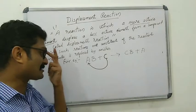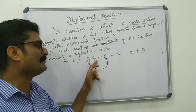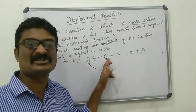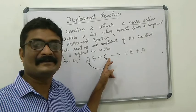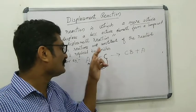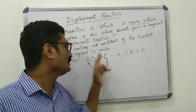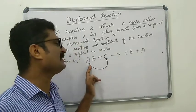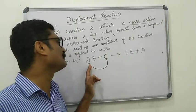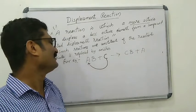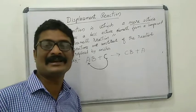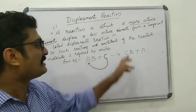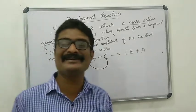For example, here the compound AB reacts with the element C. The more reactive element C takes the place of the less reactive element A. That is, here A is getting displaced and a new compound CB is formed.